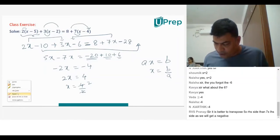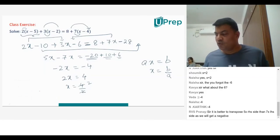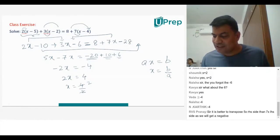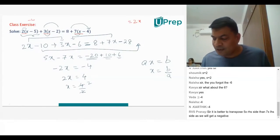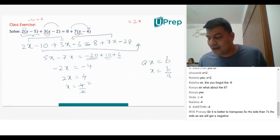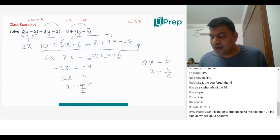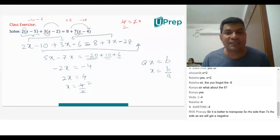Let's do it differently. Pick x's: 2x, 3x, and 7x. So 2x plus 3x is 5x. You have 7x on that side, so 7x minus 5x gives 2x on your right-hand side. On this side, 2 into minus 5 is minus 10, 3 into minus 2 is minus 6. On that side, 8 and 7 into minus 4 is minus 28. Minus 28 plus 8 will be minus 20. So minus 20 comes this side as plus 20. 20 minus 16 will be 4. So 2 ones are 2, 2 twos are — it's a one-step answer.